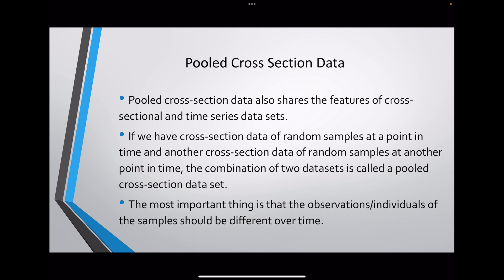Pooled cross-section data also shares the features of cross-sectional and time series data, but is a bit different from panel data. The most important difference is that the members of the cross-section will be different over time. If we have cross-sectional data of a random sample at one point in time, and another cross-sectional data of a random sample at another point in time, the combination of these two datasets is called pooled cross-section data. Because we are using random samples at different times, the members of the cross-section will naturally be different.